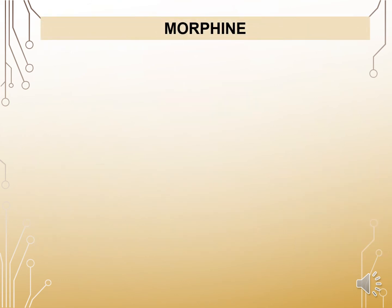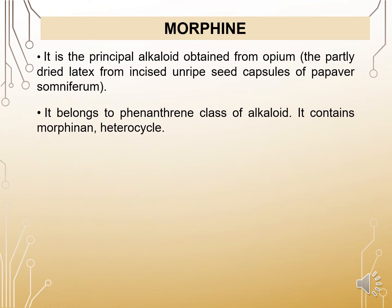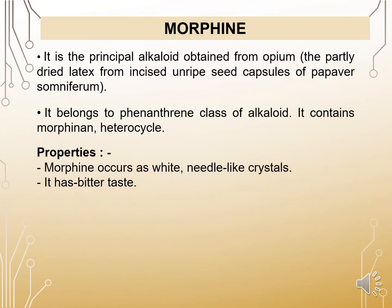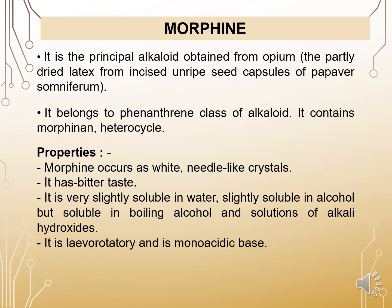Now let's start with the individual monograph. Morphine is an alkaloid; it is the principal alkaloid obtained from opium — the partly dried latex from incised ripe seed capsules of Papaver somniferum. It belongs to the phenanthrene class of alkaloids and contains morphinone as a heterocycle. Physical properties: morphine occurs as white needle-like crystals with a bitter taste. Solubility: it is very slightly soluble in water, slightly soluble in alcohol, but soluble in boiling alcohol and solutions of alkali hydroxides.